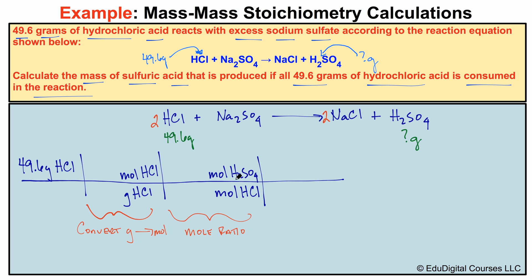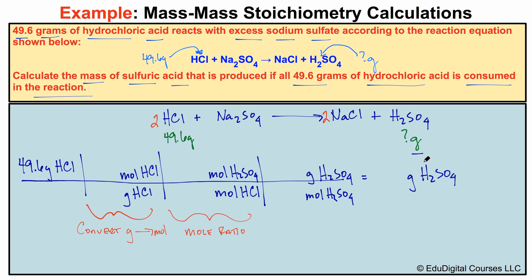We need a mole ratio — a comparison between sulfuric acid and hydrochloric acid — which we obtain from our correctly balanced chemical equation. Then in the last step we cancel out moles of H₂SO₄ in the denominator and place grams of H₂SO₄ in the numerator. That is what we are asked to find: the number of grams of H₂SO₄.